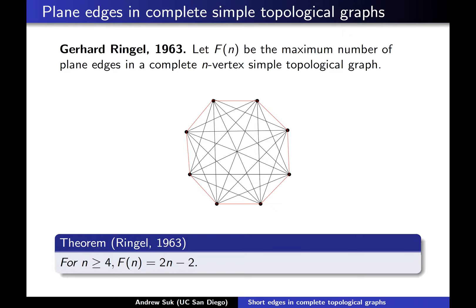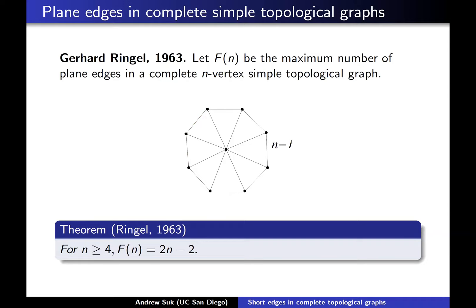You can get an upper bound of 2n − 2 by essentially double counting, and you can get a lower bound of 2n − 2 by taking the following drawing: take n − 1 points in convex position, you have these n − 1 edges, then you have an internal vertex as the last vertex, and again another n − 1 edges. The only edges left to draw connect two vertices on the outer wheel, and if you draw them outside of the wheel, all of these 2n − 2 edges will stay plane.